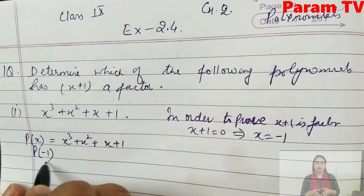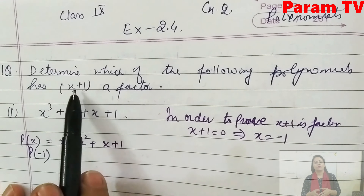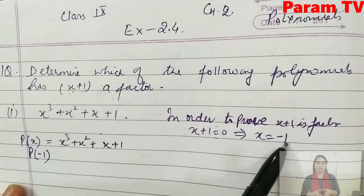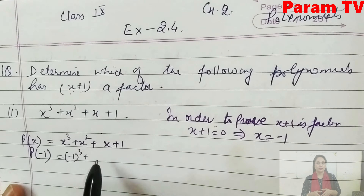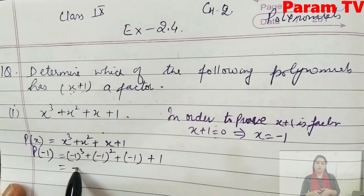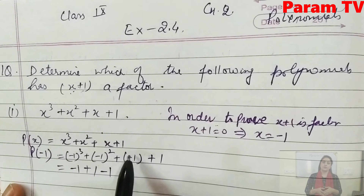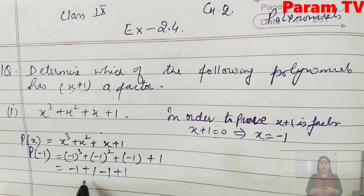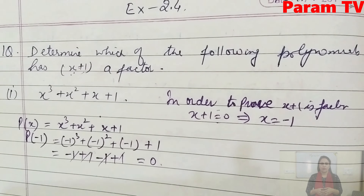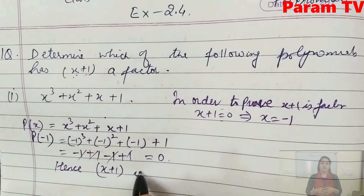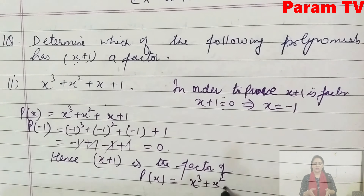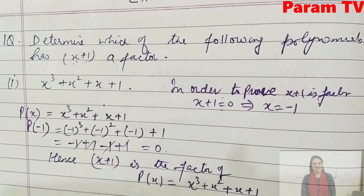Let's write: p(-1) = (-1)³ + (-1)² + (-1) + 1 = -1 + 1 - 1 + 1 = 0. It gives us 0. Hence, x+1 is the factor of p(x) = x³+x²+x+1. Yes, this is a factor.